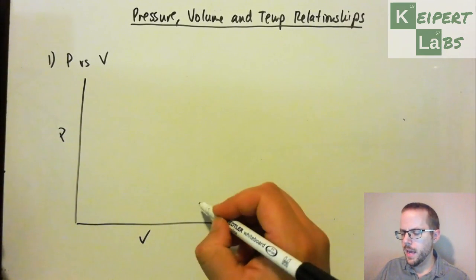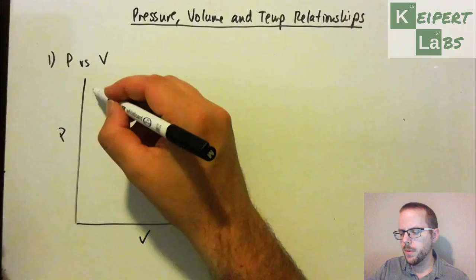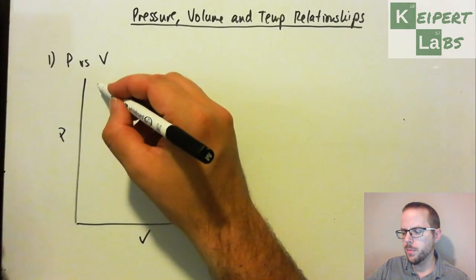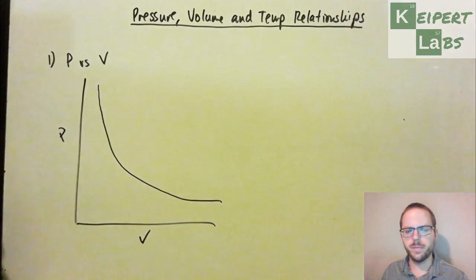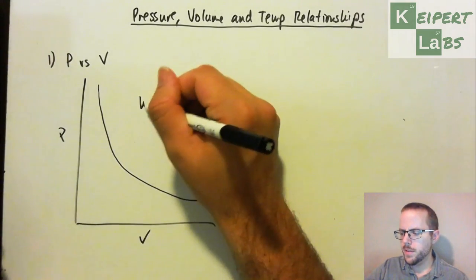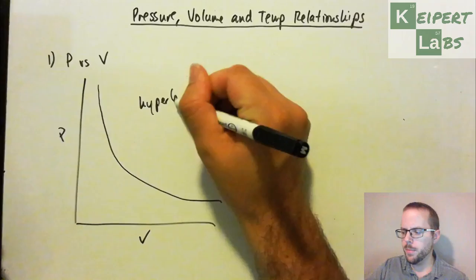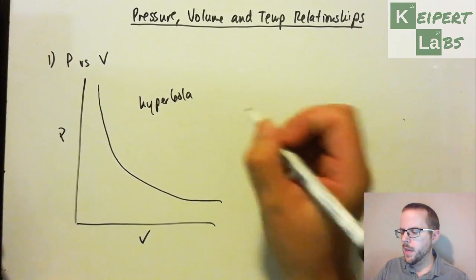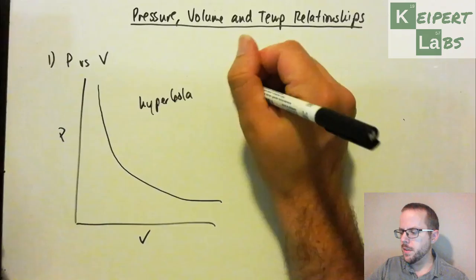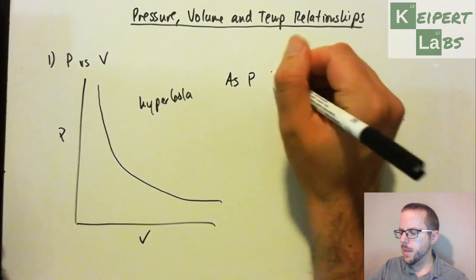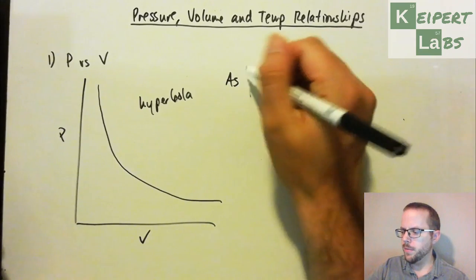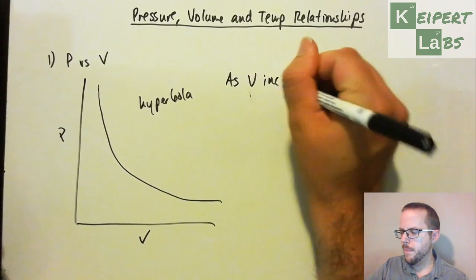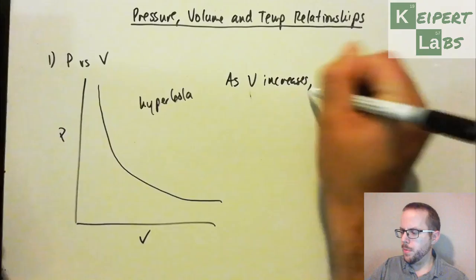So we saw that as we took the sample and then as the volume increased, the pressure decreased. So in mathematical terms we call this type of curve a hyperbola. So as volume increases, pressure decreases.